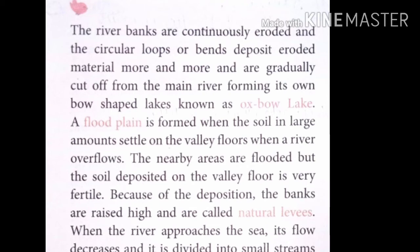A flood plain is formed when a large amount of soil is deposited on the valley floors when a river overflows. The nearby areas are flooded and soil is deposited on the valley floor, making it very fertile. During a flood, the area fills with water and the soil is deposited as the water flows slowly. Because of the deposition, the banks are raised high and are called natural levees.